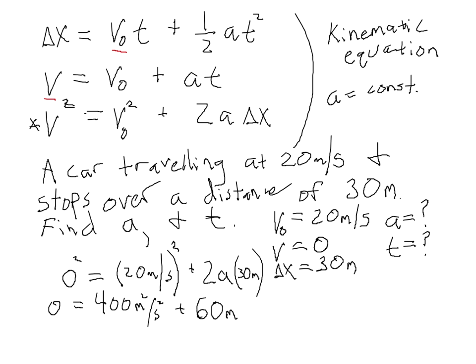We need to subtract 400 from both sides and divide by 60 to get a. So a is minus 400 meters squared over seconds squared, divided by 60. That's the same thing as 40 divided by 6. 6 goes into 40 six times with 4 left over, so that's 6.6 repeating. So the acceleration is equal to -6.7 meters per second squared. Because the meters cancel one of those meters, and we're left with meters per second squared.